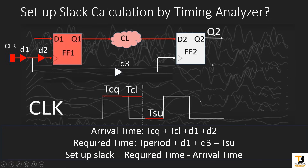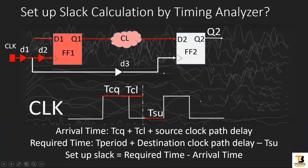So this you need to remember. Some tools report timing in this form, while others report it slightly differently. D1 plus D2 is the source clock path delay — the delay taken by the clock to reach the source flip-flop. D1 plus D3 is the destination clock path delay — the time taken by the clock from clock pad to reach the destination flip-flop. Replacing these: arrival time equals TCQ plus TCL plus source clock path delay; required time equals time period from Create Clock Constraint plus destination clock path delay minus setup of the flip-flop. Slack equals required time minus arrival time.